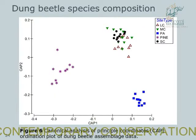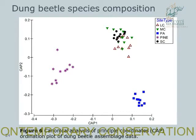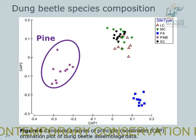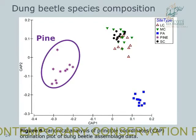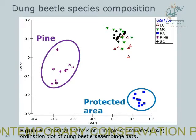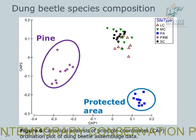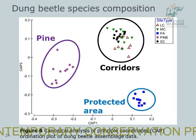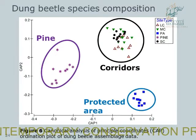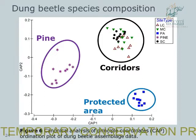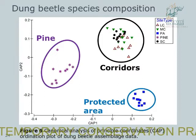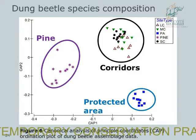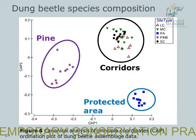This figure shows the differences in species composition among the different site types. Pine plantations housed significantly different dung beetle assemblages compared to the grasslands, and the protected area also housed different assemblages compared to the corridors. Among the corridors themselves there were no different assemblages — the smaller corridors housed nested subsets of the dung beetles present in the larger corridors, and contained significantly fewer species compared to the protected area.